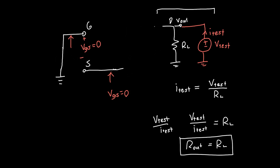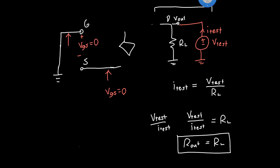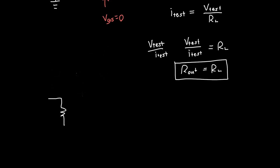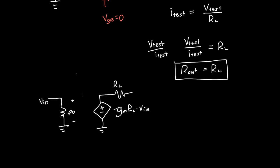Applying the definition was a bit tricky — we had to recognize that we could remove the current source — but after that the computation was trivial. We've now fully analyzed the common source amplifier. Its equivalent circuit model has an infinite input resistance, a voltage gain of -gm*RL applied to the input voltage, and an output resistance equal to RL. This is the complete circuit model for the common source amplifier. If you have any questions or comments please put them below, and if you liked the video please like and subscribe. See you next time!